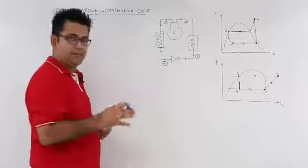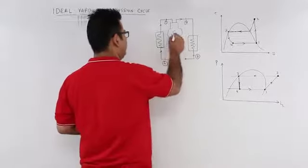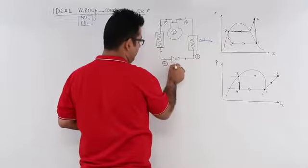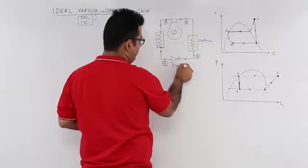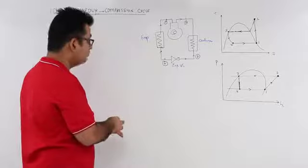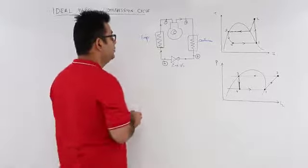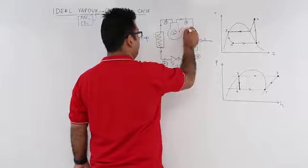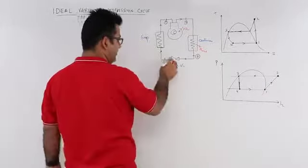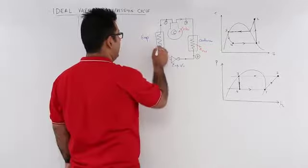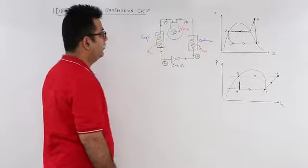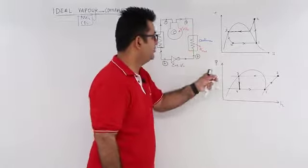The system schematic stays the same: you have a compressor, a condenser, an expansion valve, and an evaporator. In the compressor you have some work input; in the condenser you have heat rejection; the expansion valve does nothing in terms of work; and the evaporator has heat absorption.